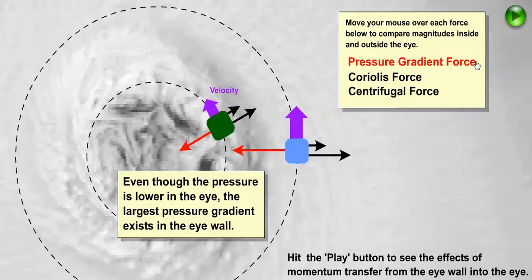First we have the pressure gradient force, which is directed in toward the center of the storm. Even though the pressure is lower in the eye, the largest pressure gradient exists in the eye wall, so the pressure gradient force acting on the blue parcel in the eye wall is larger.